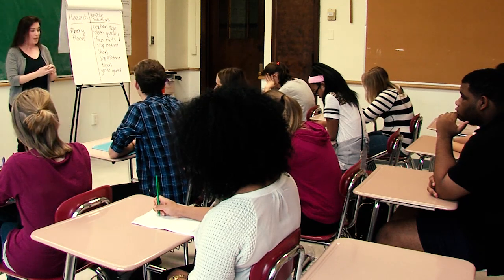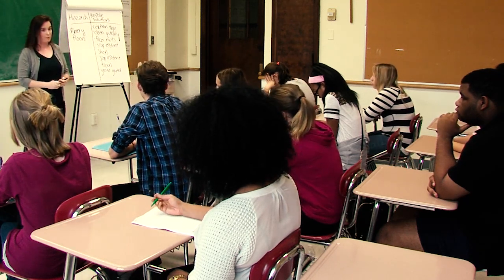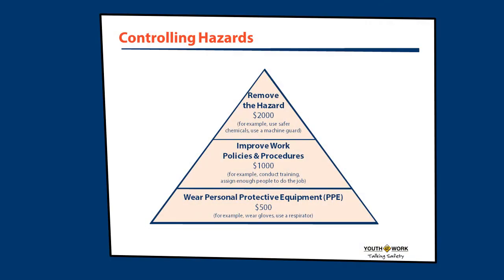A grease guard. There are a lot of ways to reduce a hazard, but some are more effective than others. See how the pyramid is divided into three categories. Removing the hazard is the most effective means of preventing workplace injuries and illness. Improving work policies is the next most effective, and wearing personal protective equipment — PPE — is considered the least effective because it doesn't remove the hazard. Plus, it has to fit and be worn properly every time it's used. It also shifts the burden onto individual workers rather than making the environment safer for everyone.